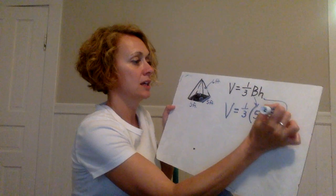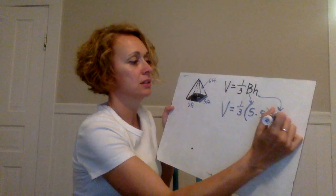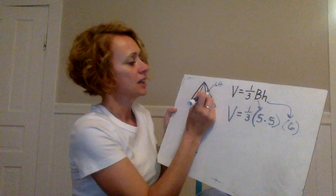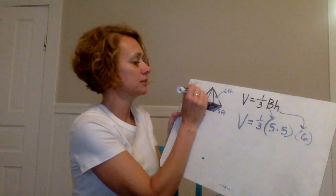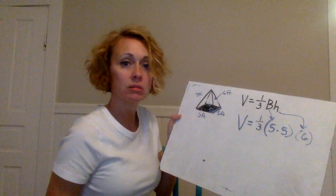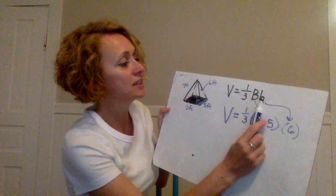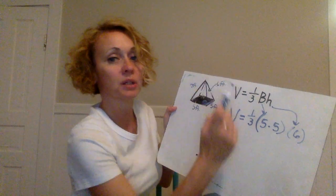Then the height would be the height of the pyramid. That is six. And even if you were given these lateral leg lengths you wouldn't even need it because all you have to do is multiply the base area times the height of the pyramid.